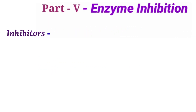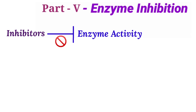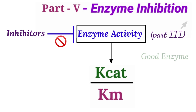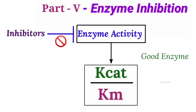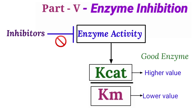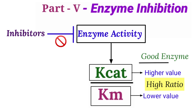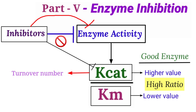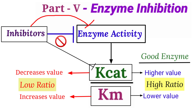Inhibitors are known to decrease the enzymatic activity. Please recall our part 3 of the 8th lecture where we defined that a good enzyme should have a high Kcat by Km ratio — Kcat value should be high and Km value should be low. Inhibitors affect enzymatic activity by decreasing the Kcat value, which is also known as turnover number, and by increasing the Km value, thus also altering the Vmax value of the reaction.